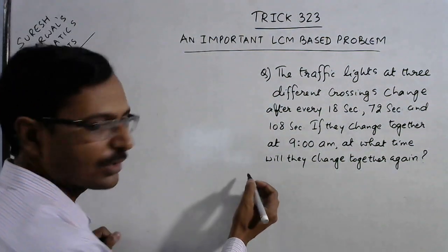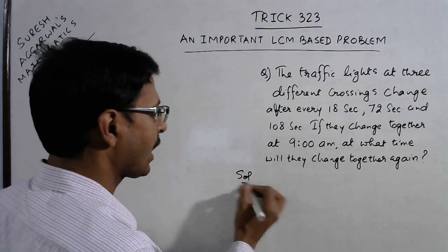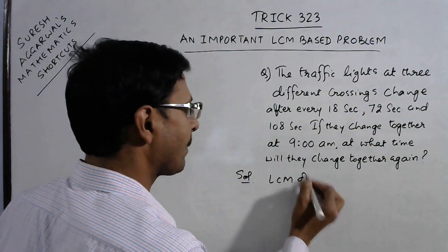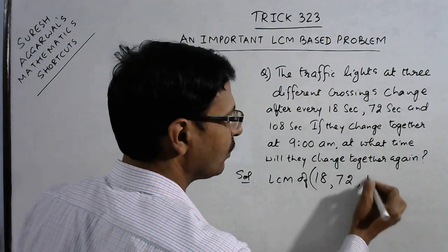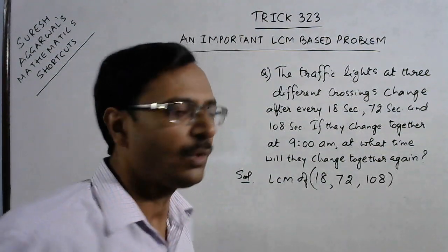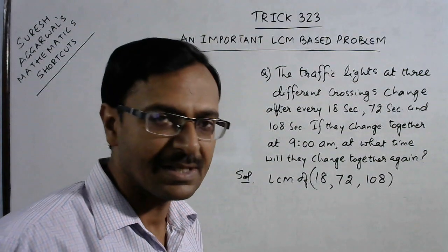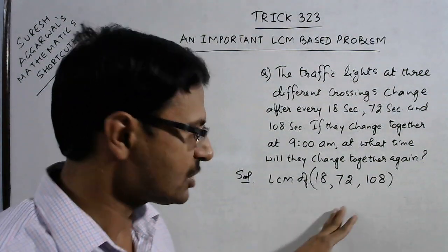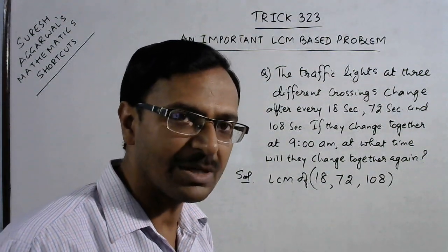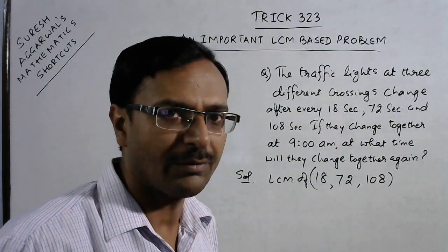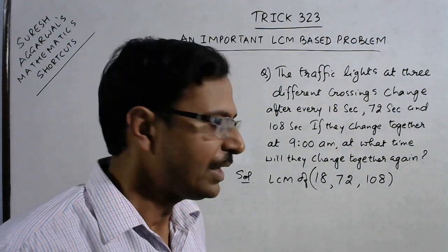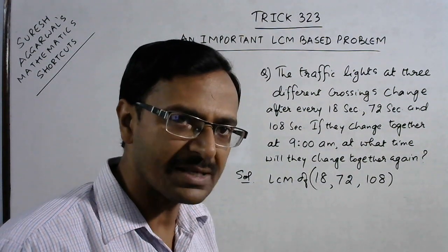So what we do is we take the LCM of 18, 72, and 108. Now how do you find the LCM of these three numbers? The traditional method will consume a lot of time, so you need to know a little bit of the basics of finding LCM.